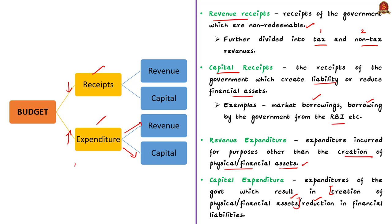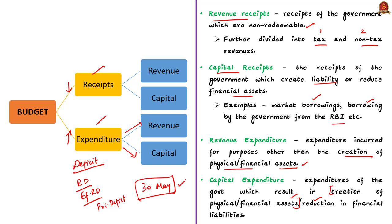When government expenditure is more than receipts, it incurs a deficit. There are various measures that capture government deficit — these include revenue deficit, effective revenue deficit, and also primary deficit. In our 30th May news analysis video we discussed in detail about types of government deficits, and we recommend watching that video for better understanding.